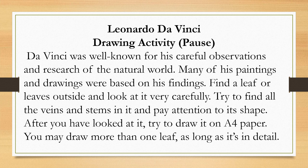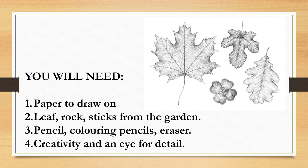Go outside to your garden and look at some leaves very carefully. Try to find all the little veins and stems in them and pay attention to their shape. After you have looked at a leaf, try to draw it on paper. You may draw more than one leaf as long as it's in detail. You may pause the video now to read the instructions again. You will need paper to draw on, then a leaf or leaves from the garden. You'll need a pencil, coloring pencils and an eraser. And you'll definitely need creativity and an eye for detail. Remember the definition of detail? You learned about it — yes!